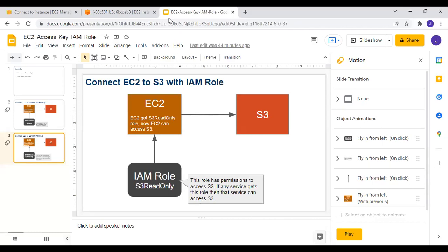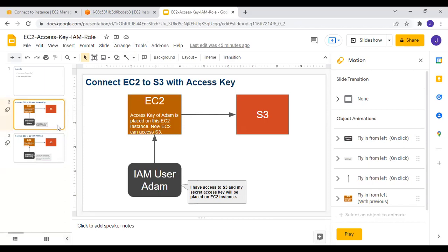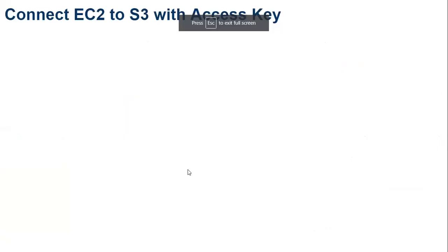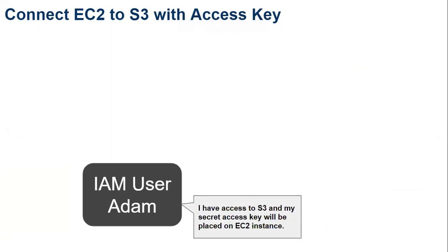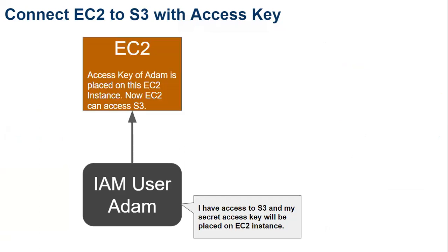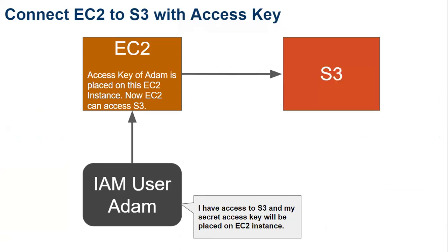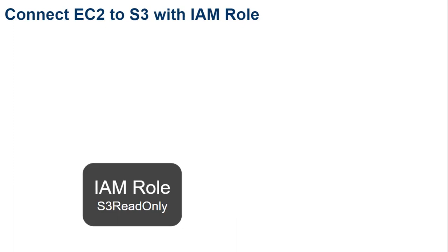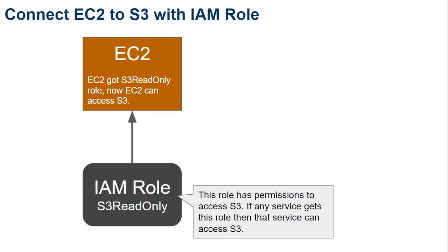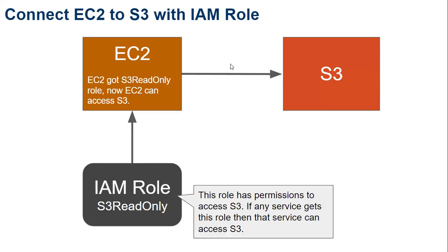Let's summarize. In the first part, we created IAM user Adam, took his access key ID and secret key, and placed them on the EC2 machine so it could access S3. In the second part, we created an IAM role S3ReadOnly with permission to access S3 and assigned it directly to the EC2 instance — the better and recommended approach.